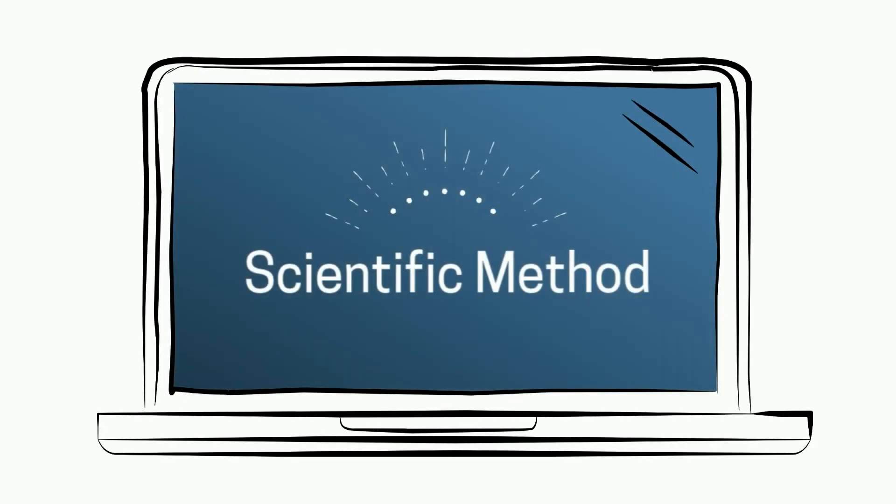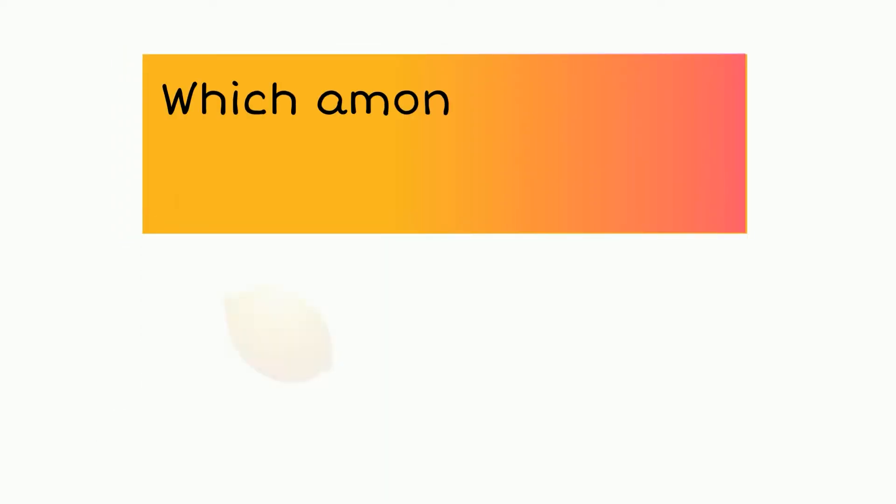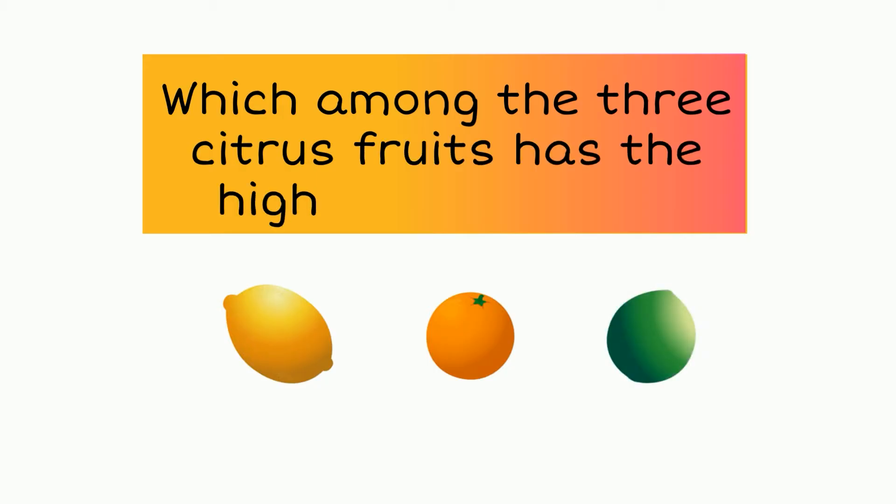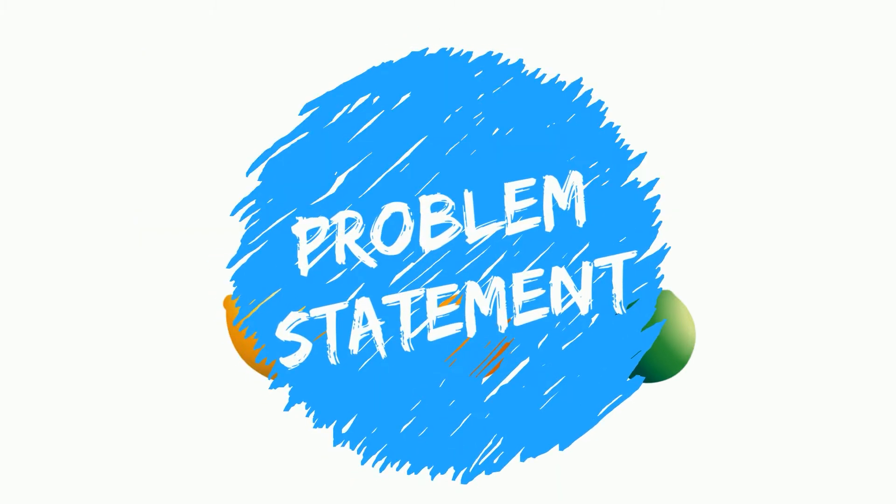Let's take the example that we used in our previous video. If you haven't seen it, I'll provide a link in the description box below. We wanted to find out which among the three citrus fruits, lemon, orange, and lime, has the highest content of vitamin C. This is where we will be obtaining our problem statement.